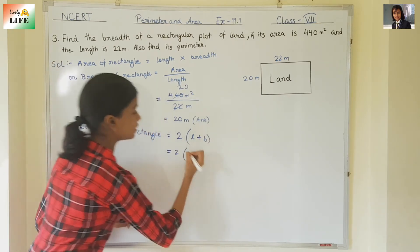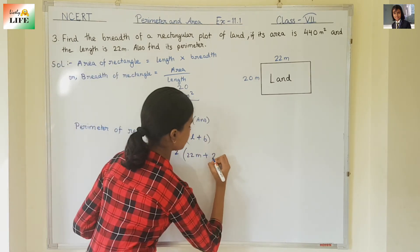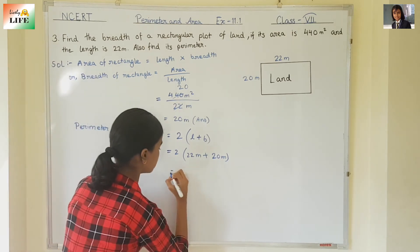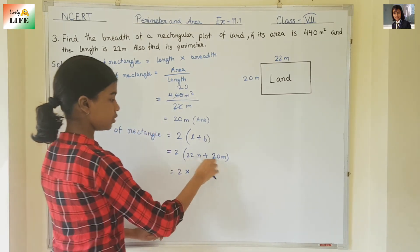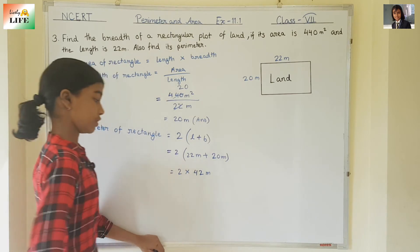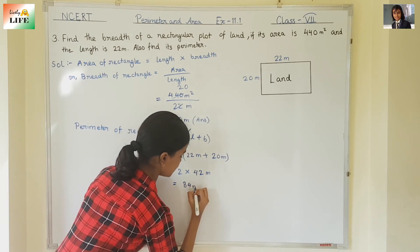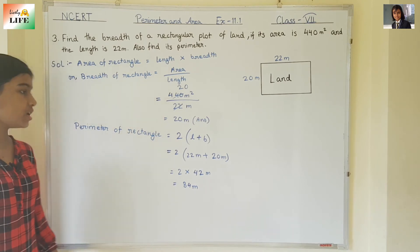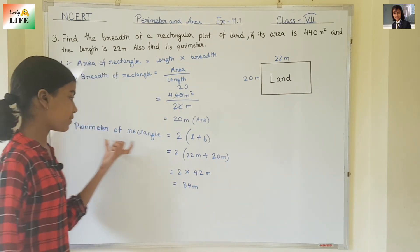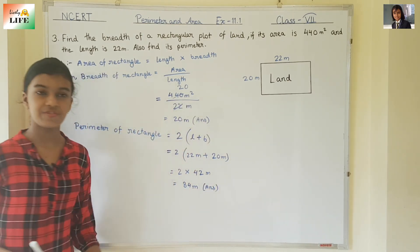So, 2 into — what is the length? 22 meter. Plus, what is the breadth? 20 meter. We have already found it. So, 2 into 22 meter plus 20 meter. Add these: 22 plus 20 is 42 meter. Then 2 into 42 meter — 2 twos are 4 and 4 twos are 8 — so 84 meter. This is the perimeter. The unit of perimeter is meter only. For area it is meter square, but for perimeter it is meter. So the perimeter of the rectangle is 84 meter.